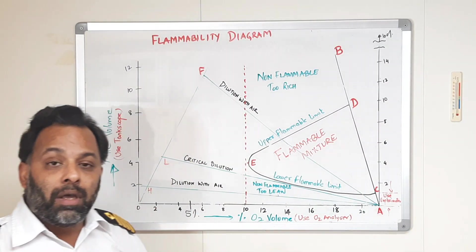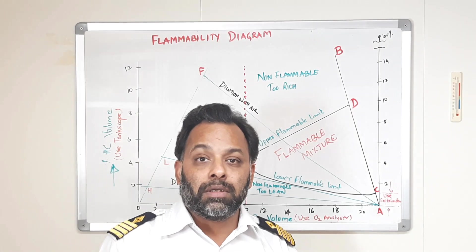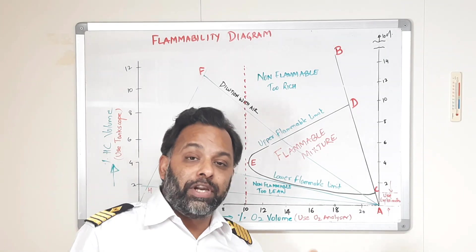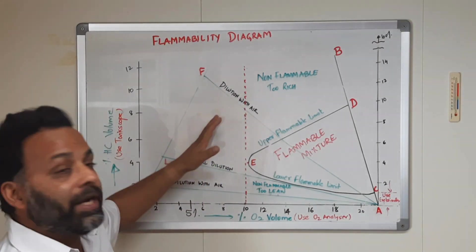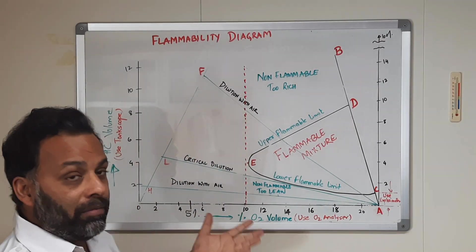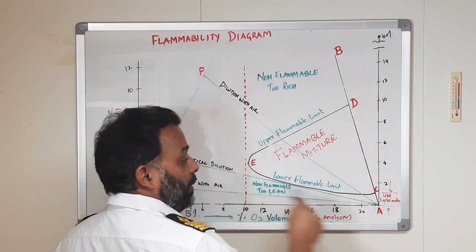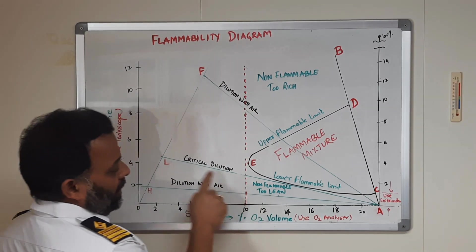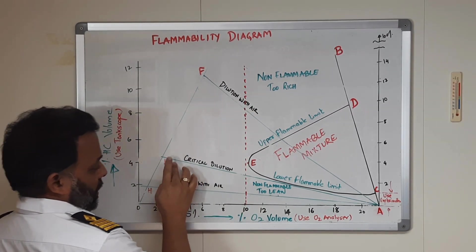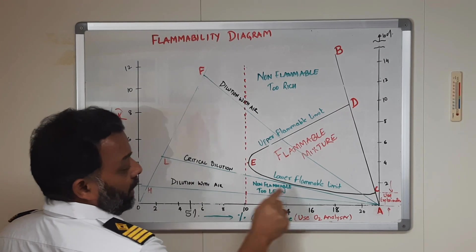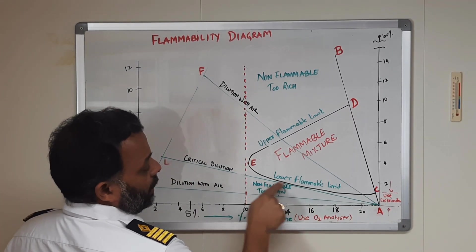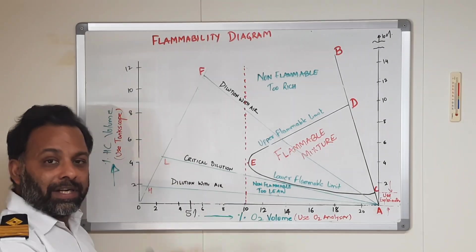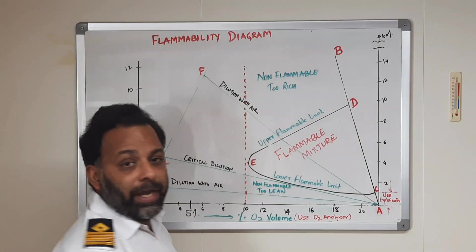So, flammability diagram tells us how to avoid this flammable mixture region so that we do not have any point, we do not have any time where we go through this flammable mixture region. This is the critical dilution line, this is the maximum dilution of air which is just clear of this flammable region. But, it is better to go further down as much as you can and then introduce air into the system.